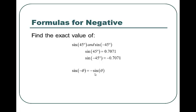It didn't happen with cosine. With cosine, the cosine of negative theta was equal to cosine theta — that negative just disappeared. We don't see that very often in math, and it only happens for cosine. It doesn't happen for sine or tangent.